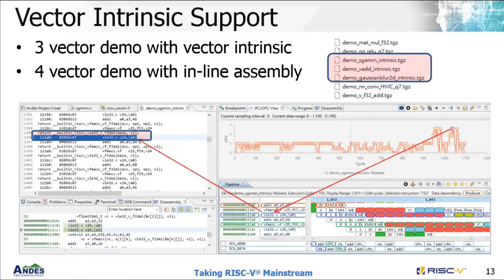For vector intrinsic support in AndesITE, we include three vector demos with vector intrinsics and four vector demos with inline assembly in the standard package. The intrinsic demos include operations like addition, Gaussian blur, and matrix multiplication. You can import these demos directly in AndesITE and start debugging once you install the IDE. The screenshot shows using AndesKlarity — you can double-click on an instruction and it will point out where it is in the code, along with the bubbles in the operations protocols view.